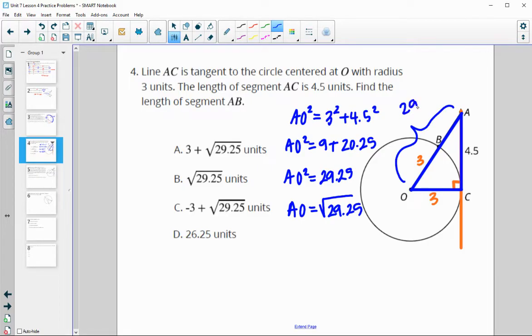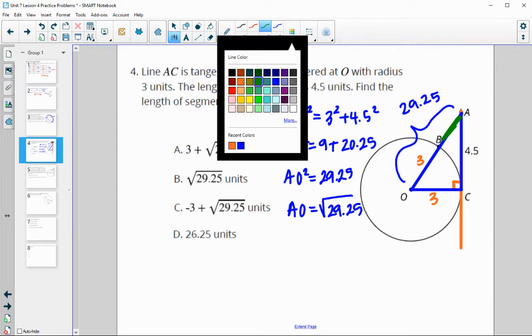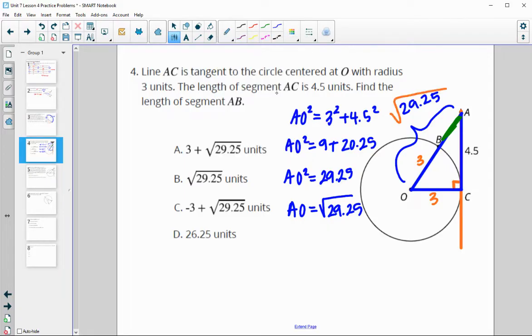So this length here is square root of 29.25. So if we want just this part, we're going to have to subtract off that radius. So we're going to do the square root of 29.25, and we're going to subtract 3 from that. So just subtract off this radius to get that leftover length. And so this would be square root of 29.25 minus 3. And so if we look at this, the square root of 29 is positive. The 3 is negative. So this one will not work because that's a positive 3. This is only square root of 29.25. This has a negative 3 and a positive root 29.25. So C is our answer.